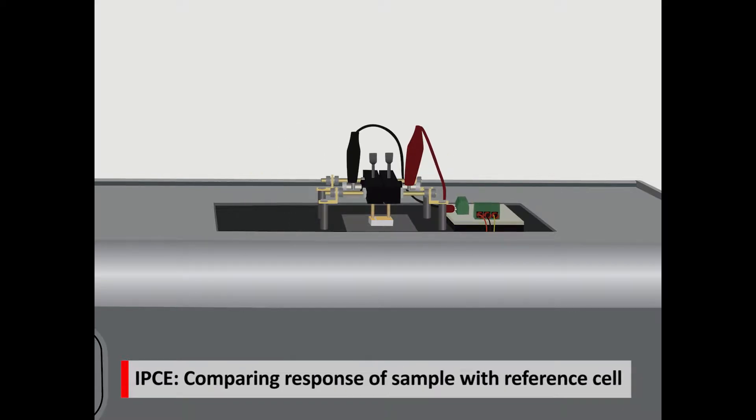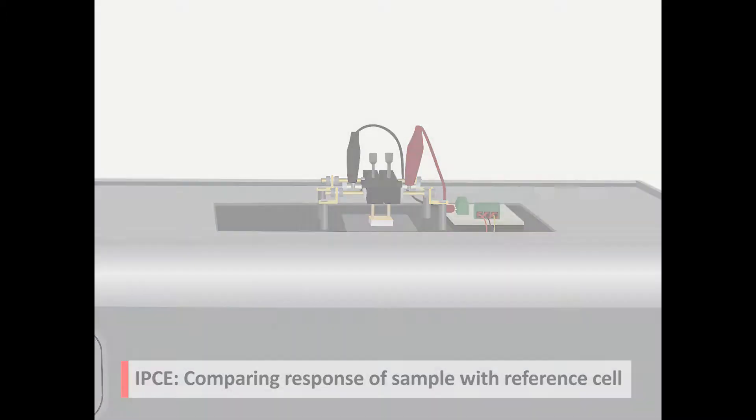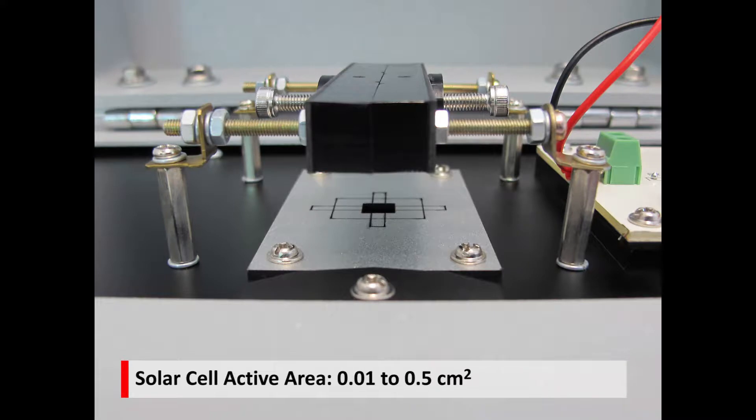Measuring IPCE is made by independent measurement of both sample and reference cell. Solar cell samples of maximum 0.5 cm² can be tested with this system.